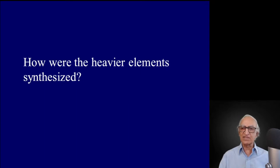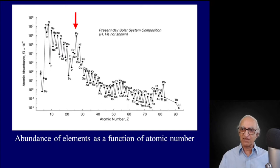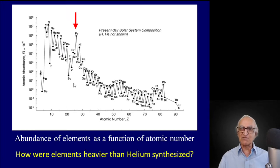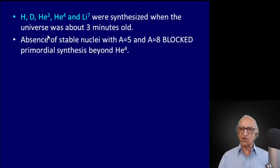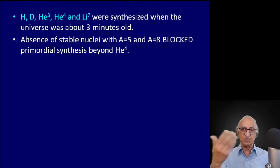In the remaining few minutes, let me discuss how the heavier elements were synthesized. If they weren't synthesized when the universe was three minutes old, how were they produced? Hydrogen is primordial. Deuterium, helium-3, helium-4, and lithium-7 were synthesized when the universe was about three minutes old. The absence of stable nuclei with A = 5 and A = 8 broke the primordial synthesis beyond helium-4. Lithium-6, beryllium-9, and beryllium-10 are produced in interstellar space when heavier elements are bombarded by cosmic rays in spallation reactions.